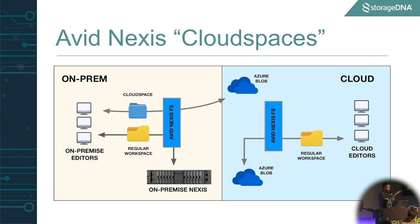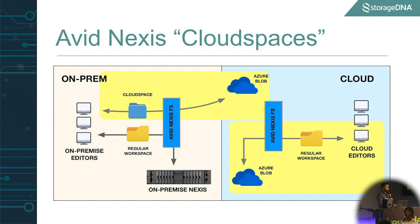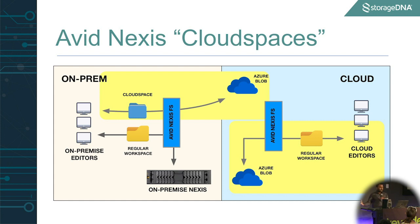I want to start by dispelling some confusion around what's Avid Nexus in the cloud, what's Avid Nexus on-prem, and what's Avid Nexus cloud spaces. There's an important point I want to make: Avid Nexus in the cloud writes to blob storage, and Avid cloud space writes to blob storage. But these two blob stores don't talk to each other today. So don't expect that if you put your data up into Azure blob through cloud spaces, you can access it through Avid Nexus in the cloud today. We've been told this will be addressed in the future, but right now they're separate stores operating completely independently of each other.